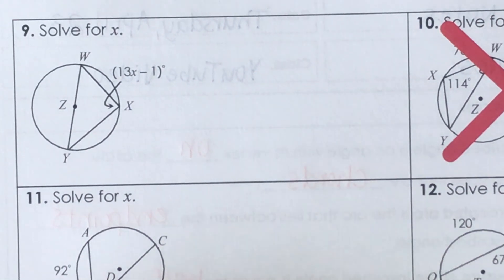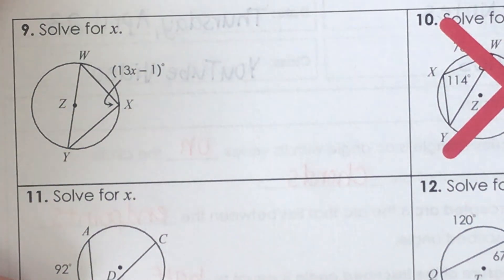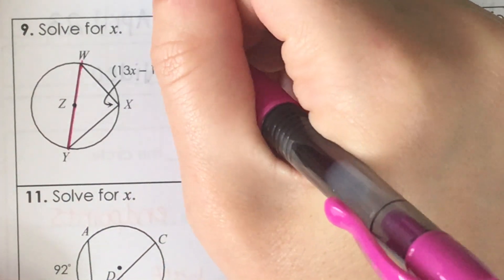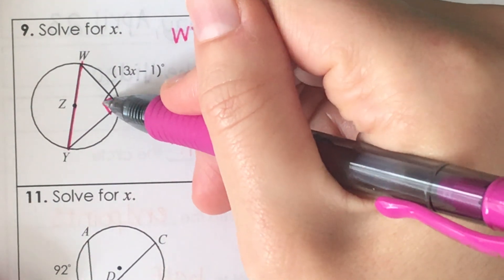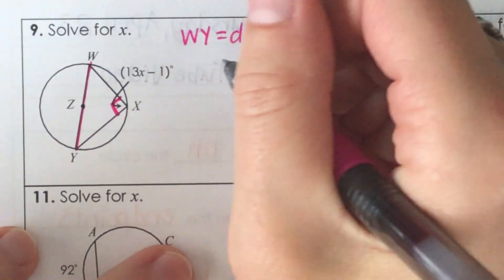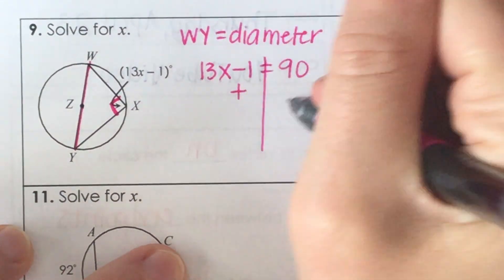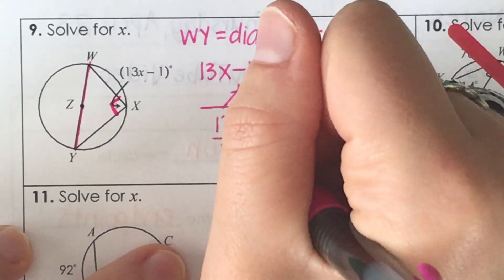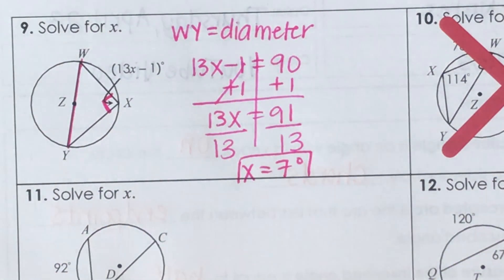Number nine: I'm going to solve for x. The segment WY goes through the center, so it's the diameter. Because it's a diameter, this angle is automatically 90 degrees. Setting up the equation: 13x minus 1 equals 90. Adding 1 to both sides and then dividing by 13 gives x equals 7.